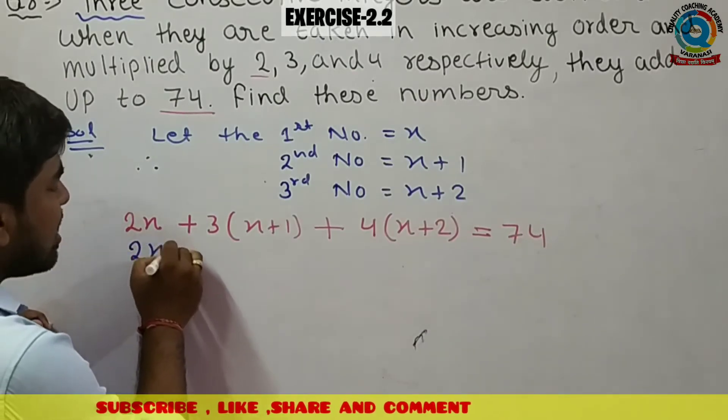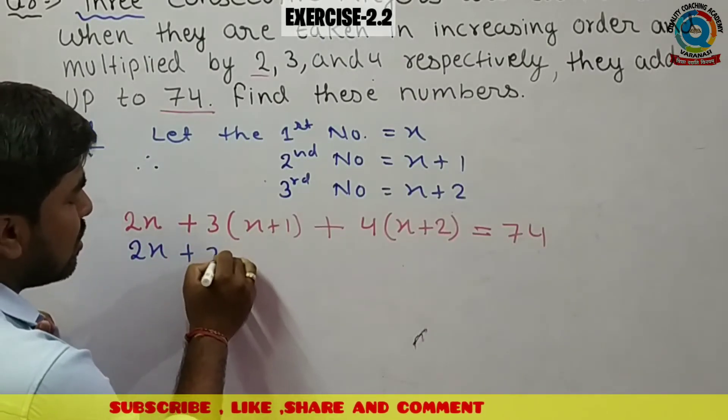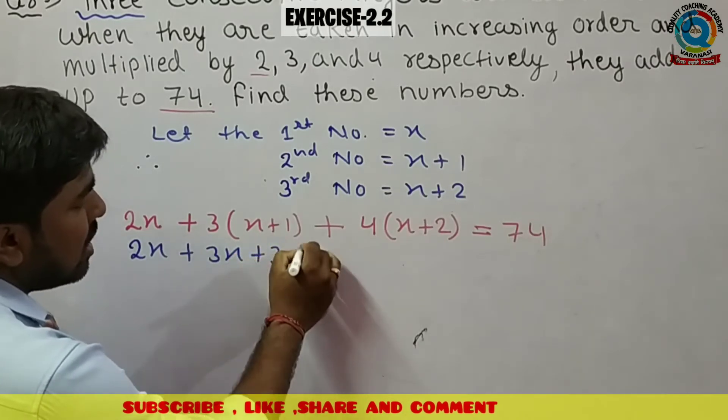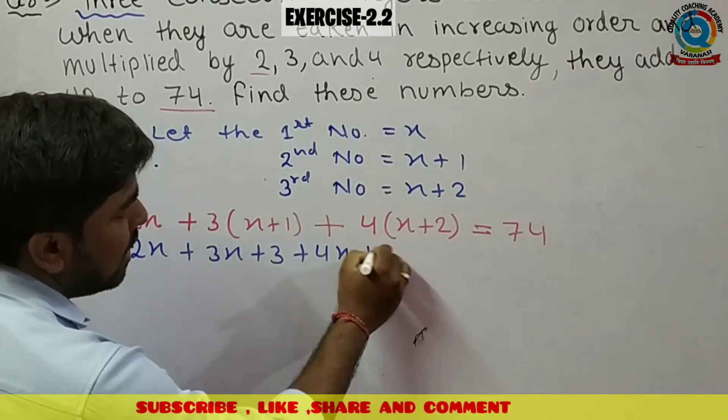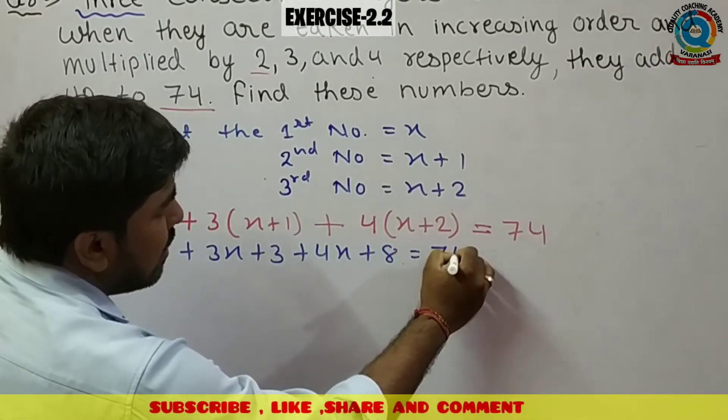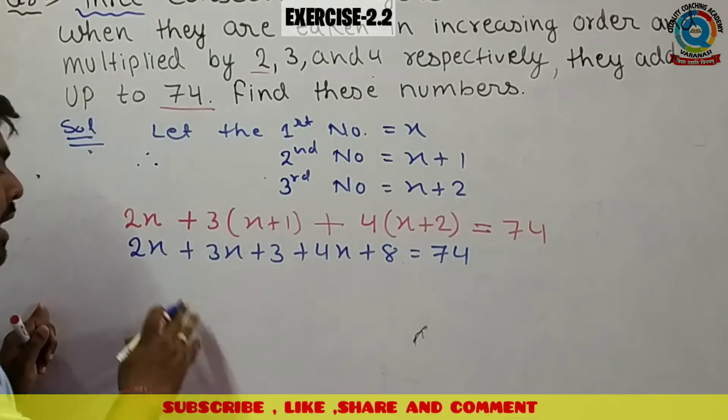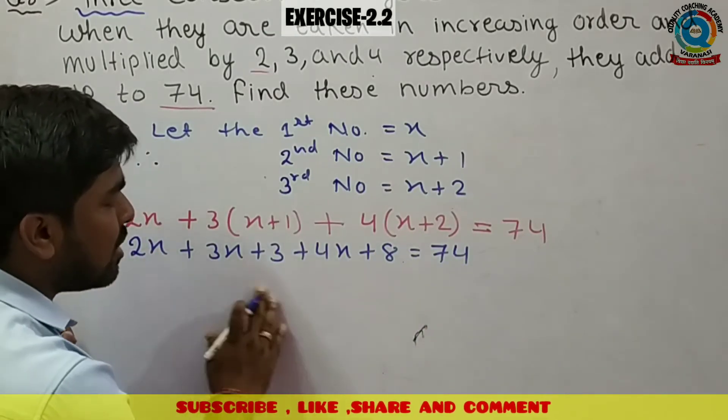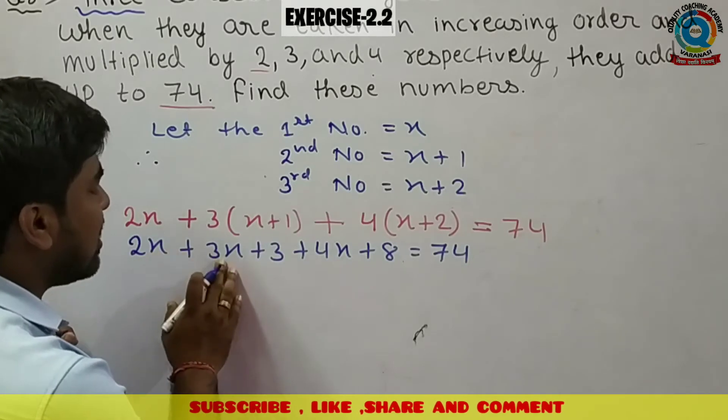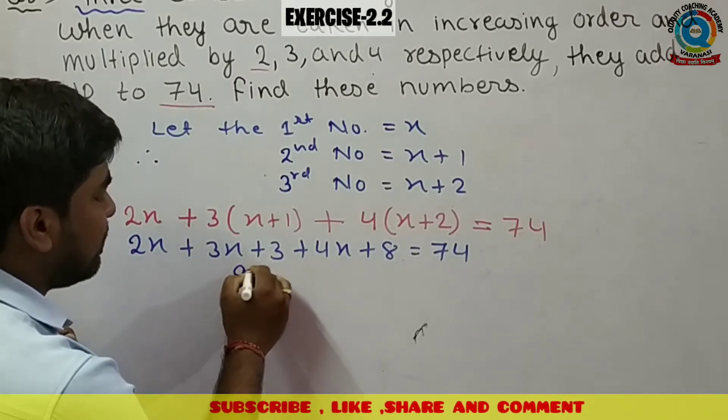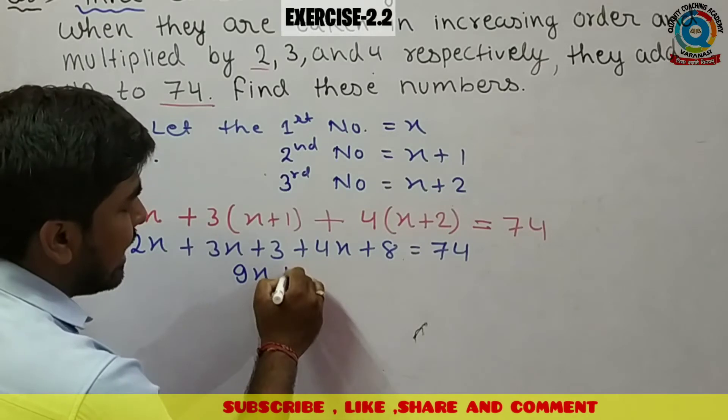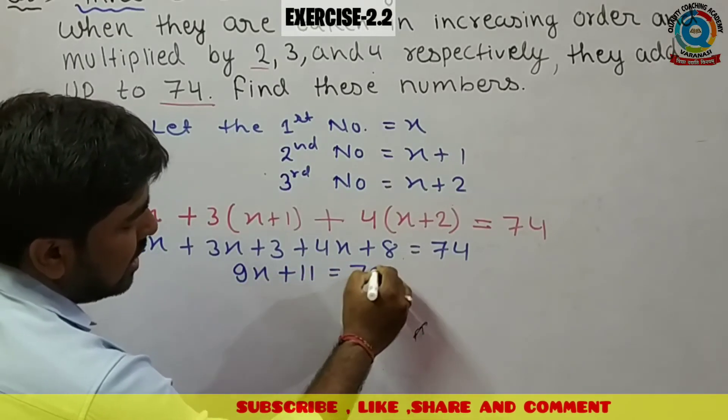Equation form karna na bahut easy hai. First, aapko bracket open karna ho ga: 2x plus 3x plus 3 plus 4x plus 8 is equals to 74. Jitne bhi x terms hai unko add karna hai. 2x, 3x, 5x, 4x, 9x. 3 or 8, 11 is equals to 74.